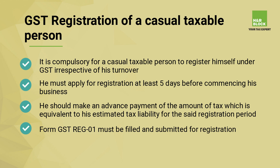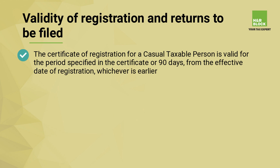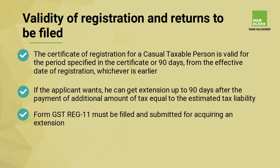Regarding validity of registration: the certificate of registration for a casual taxable person is valid for the period specified in the certificate or 90 days from the effective date of registration, whichever is earlier. If the applicant wishes, he can get an extension of up to 90 days after payment of an additional amount of tax equal to the estimated tax liability. Form GST REG-11 must be filled and submitted to acquire an extension.